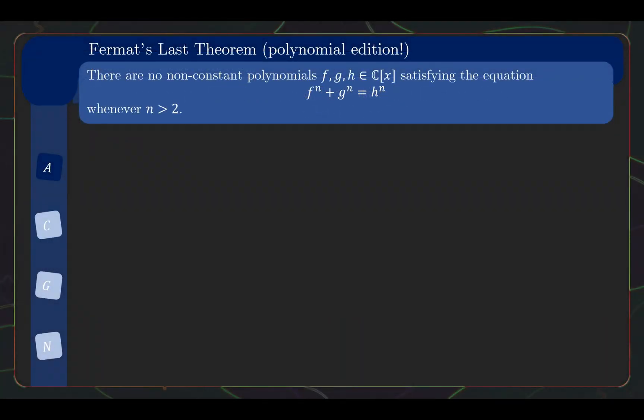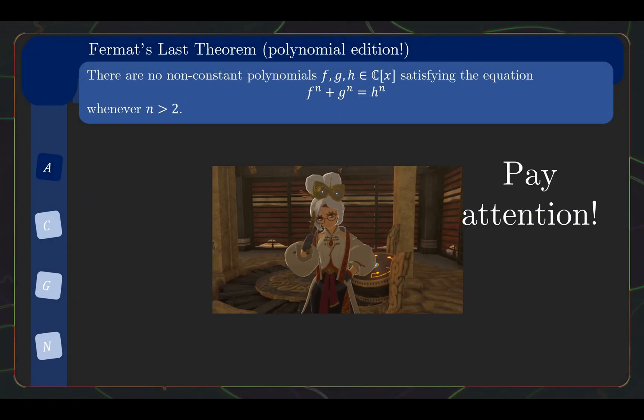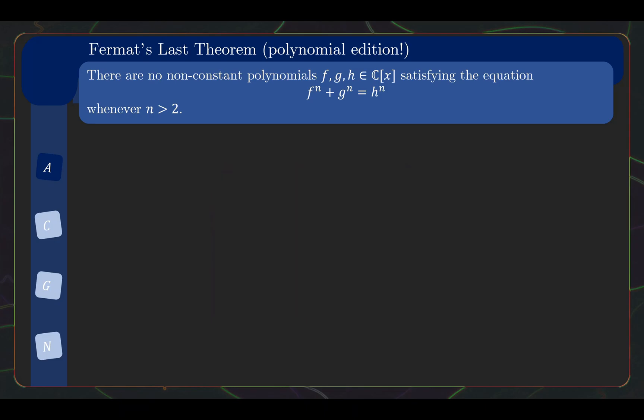How do we prove this theorem? Pay attention to the proof because there is one part where we use a special property of polynomials that we often take for granted, and this will be the flaw in Lamé's proof for Fermat's Last Theorem.